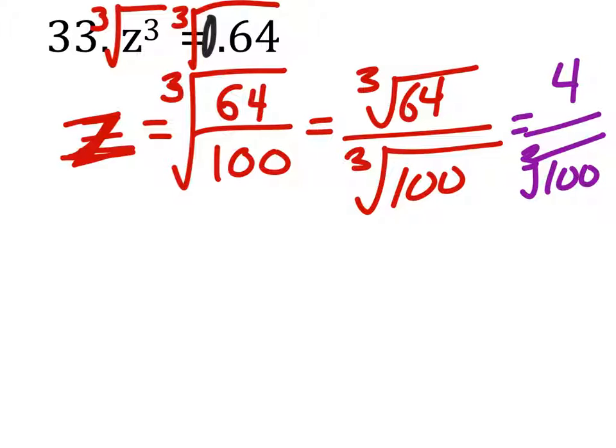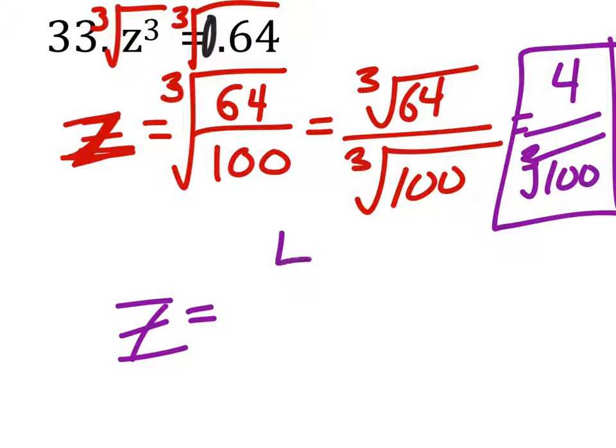And this would be your final answer as of now. Yeah, thank you. Z equals 4 over the cube root of 100. Just so you guys understand though, in 9th grade this would not be acceptable, but for now we're just going to leave it as it is.